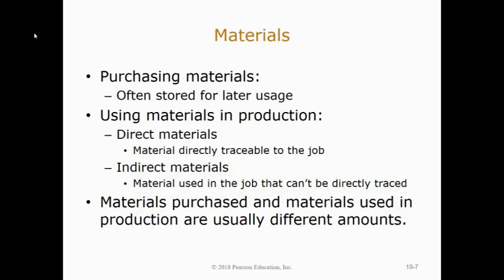The job cost record is a convenient way of keeping track of costs that went into each job, but in accounting that's not enough — we always start with recording the journal entry. For materials, we first have to buy them. We purchase raw and direct materials and have them sitting in storage to be used later. When those materials are used in production, direct materials go right into the cost of their respective job and you record that in the journal entry.